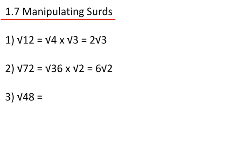Question 3: root 48. The largest square number that goes into 48 is 16, so that's root 16 times root 3. The square root of 16 is 4, so that's 4 root 3.